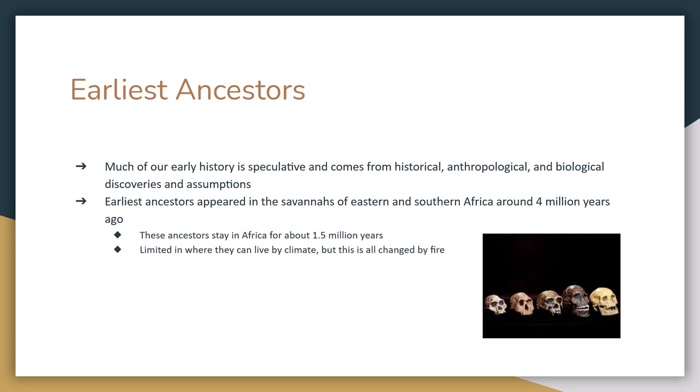Our earliest ancestors appear in the savannahs — the grasslands of eastern and southern Africa — around 4 million years ago, and they stay there for about three and a half million years. A big reason for that is climate: they have to stay somewhere warm enough but not too warm, cool enough but not too cool. Once fire is tamed, people can move into colder climates, and these early ancestors begin to move into places like Europe and Asia.